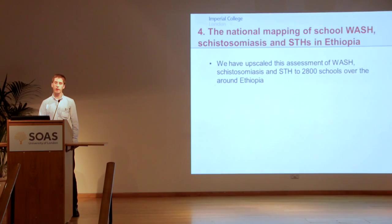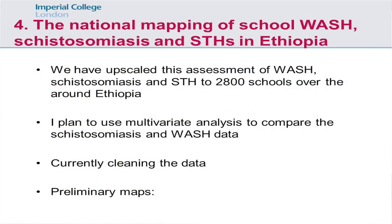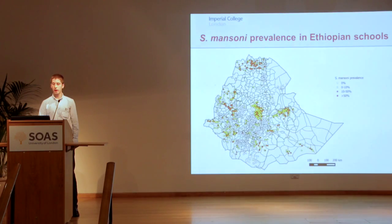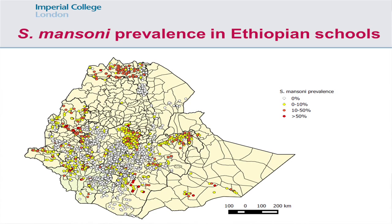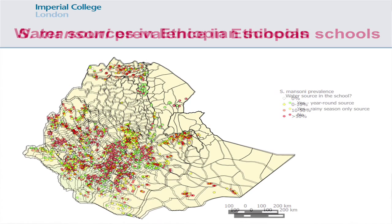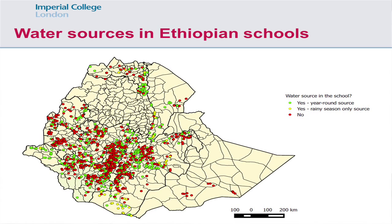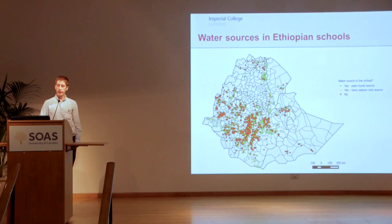It looks like we need to look at more schools to investigate these questions more thoroughly. In the recent mapping of schistosomiasis and soil-transmitted helminths across Ethiopia, all of the around 2,800 schools visited also had their water, sanitation, and hygiene assessed. I'm planning to use multivariate analysis to compare the schistosomiasis and WASH data. We're currently cleaning the data — early maps show S. mansoni prevalence across Ethiopia, occurring in many places but primarily in the north, along with maps of water sources in Ethiopian schools: green for year-round sources, yellow for rainy-season-only sources, and red for schools with no water sources at all.